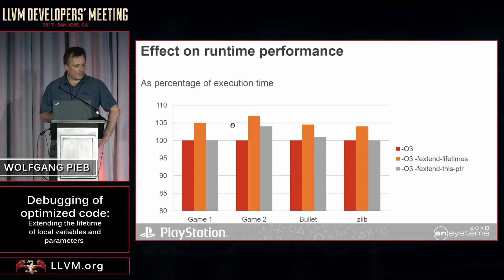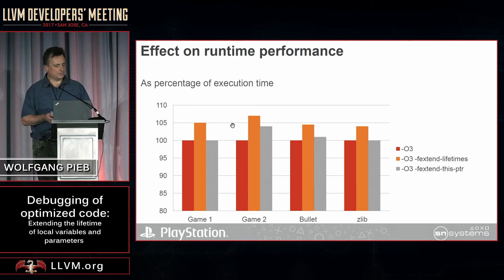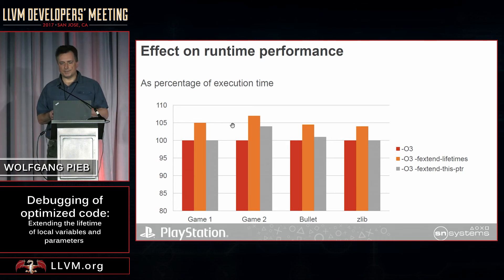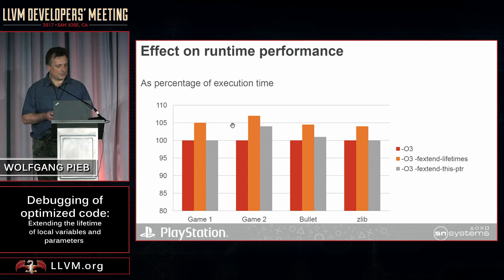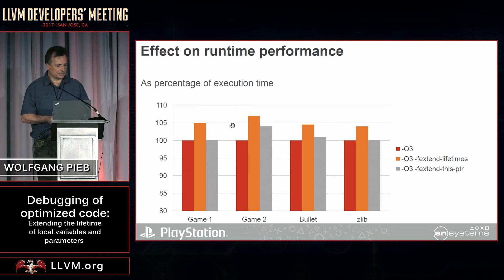Of course, we're affecting code generation here, so the question is what is the runtime performance effect? We tested this with a couple of games and two benchmarks. With the -fextend-lifetimes switch, we got a slowdown of about 5–7%. With the -fextend-this-pointer switch, we get a slowdown in one case of 4%, but otherwise it was in the noise. That seemed to be pretty acceptable to our users.